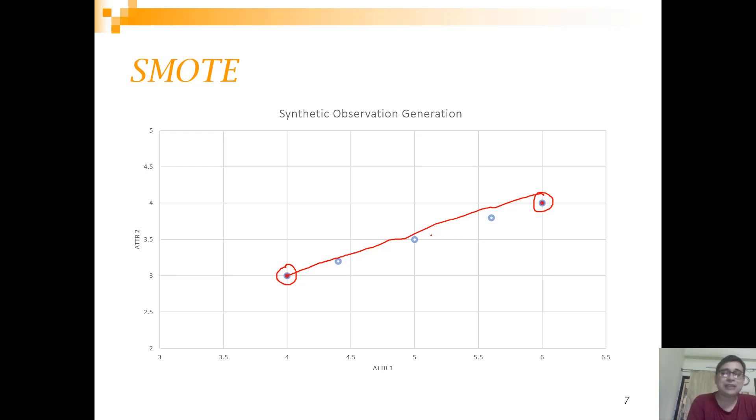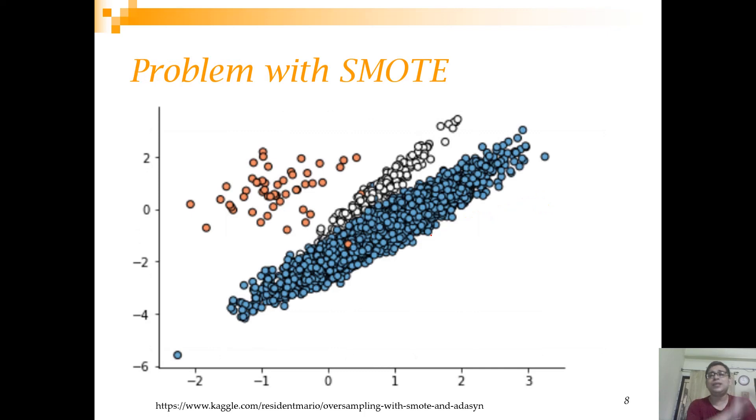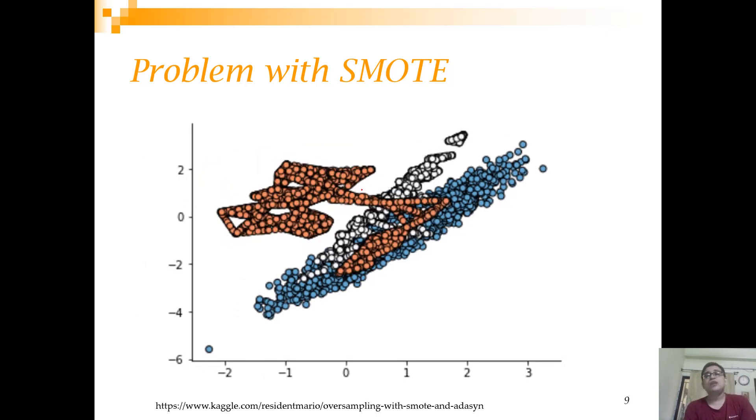SMOTE has a particular problem. Look at this example. There are three classes and this is the minority class. Look very carefully. There are some observations here embedded in the majority class, some observations here. Because of this, when you generate your synthetic observations and draw them, this is how it looks. It actually creates some point bridges. It creates bridges because of these outlier observations.